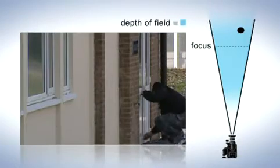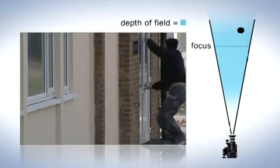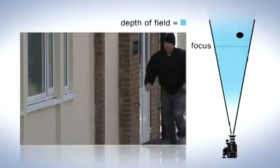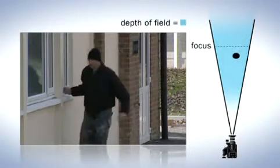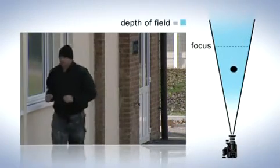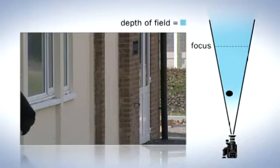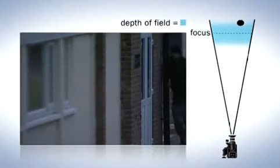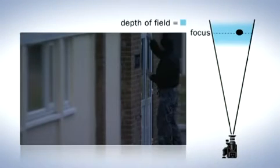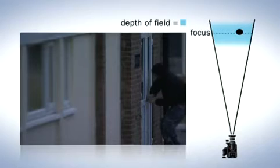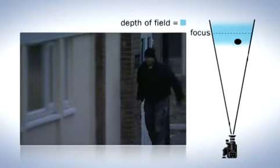The best way to maintain a constant depth of field is to provide appropriate lighting for the scene. In daylight, the camera can use a small aperture, which gives the shot a good depth of field so that the whole area is clearly visible. But in low light conditions, the lens aperture is much larger and the depth of field is greatly reduced, meaning only a certain portion of the area is now clearly visible.